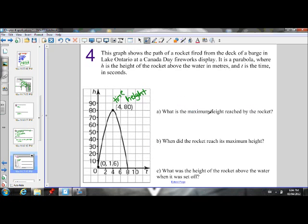So you see the word maximum, so you know it has something to do with the vertex. And you see height, so you know we're looking at the y-coordinate of the vertex. The y-coordinate of the vertex is 80. So the maximum height is 80 meters. This rocket will never go above 80 meters.